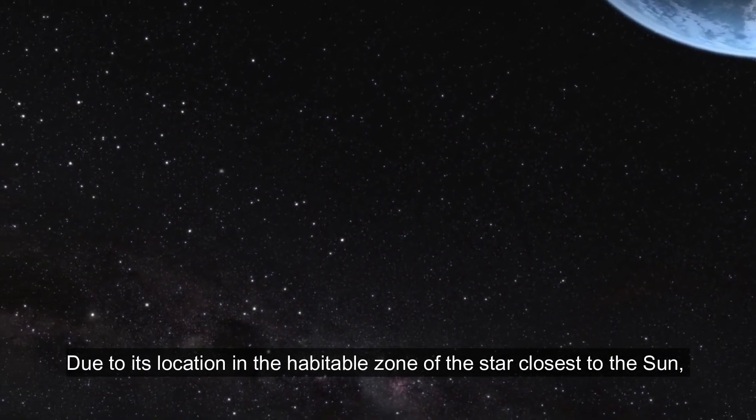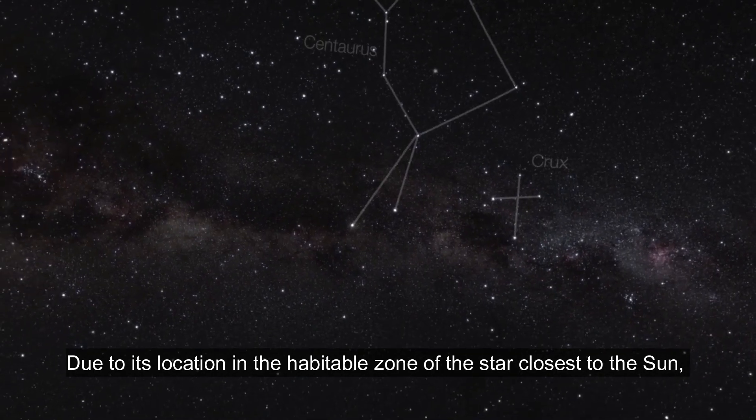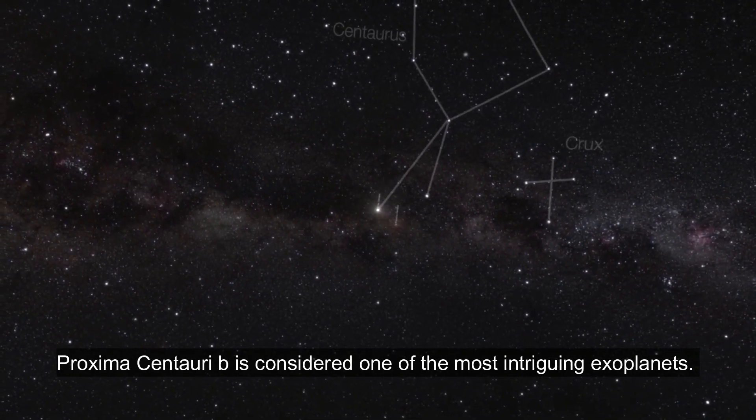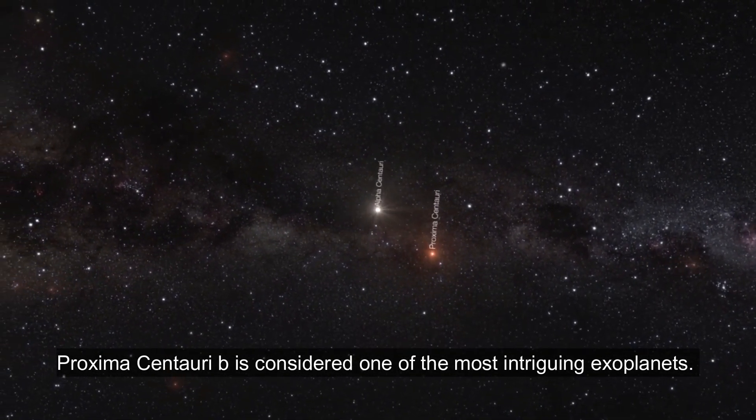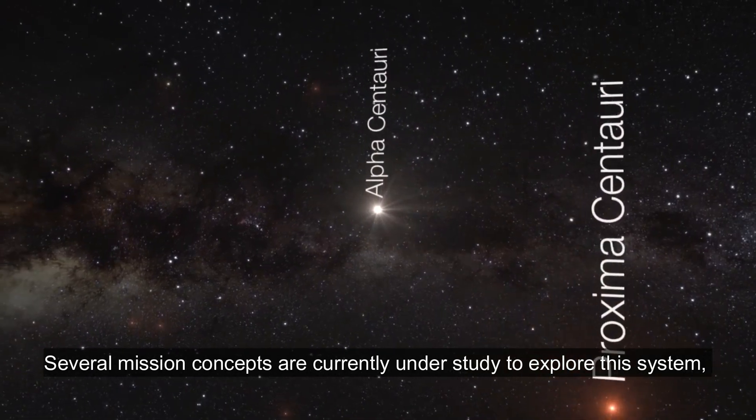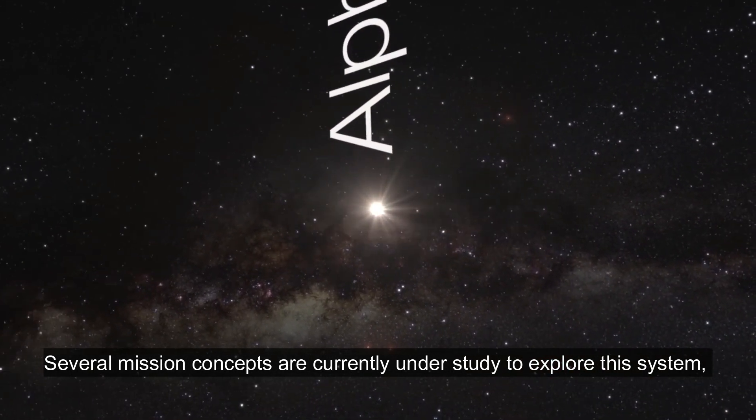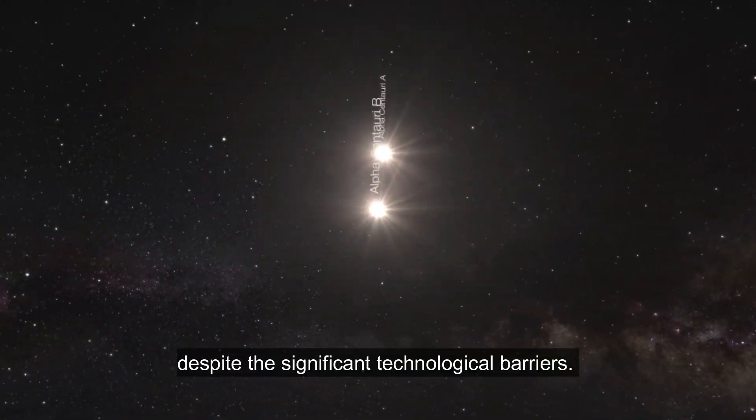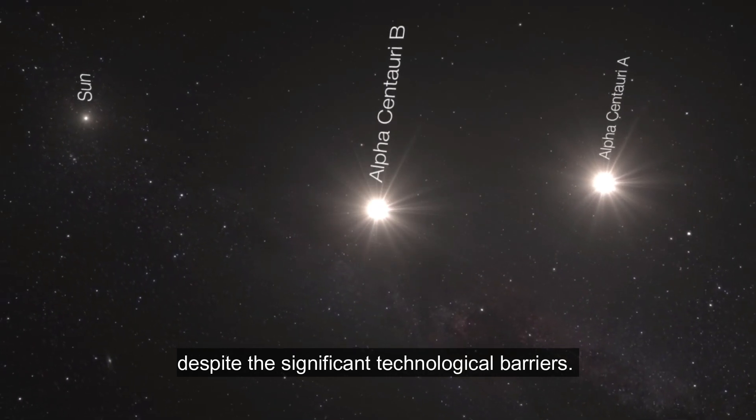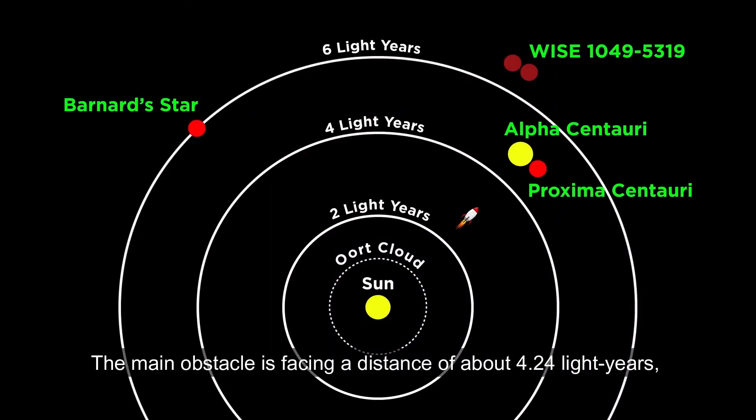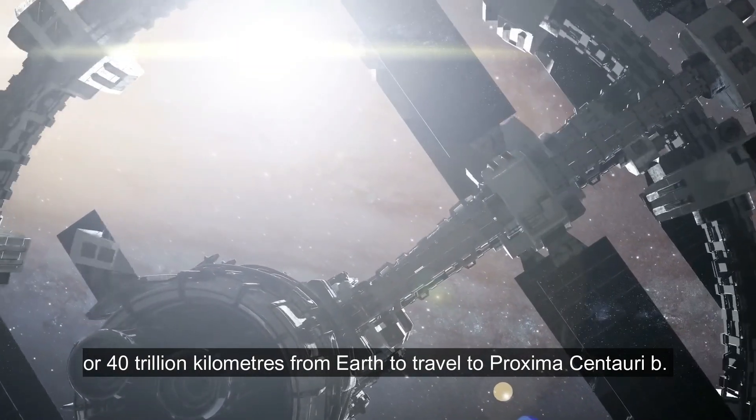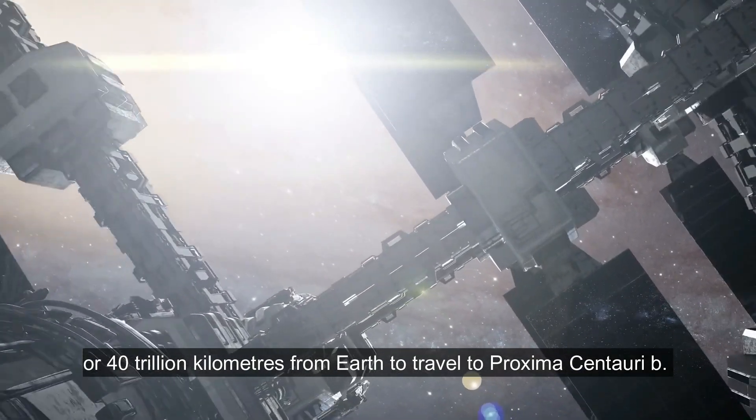Due to its location in the habitable zone of the star closest to the Sun, Proxima Centauri b is considered one of the most intriguing exoplanets. Several mission concepts are currently under study to explore this system, despite the significant technological barriers. The main obstacle is facing a distance of about 4.24 light years, or 40 trillion kilometers from Earth to travel to Proxima Centauri b.